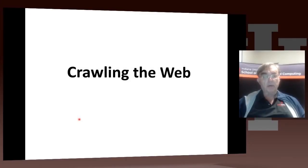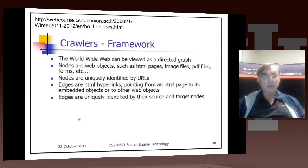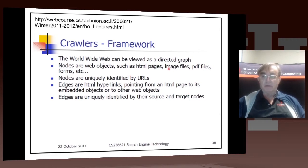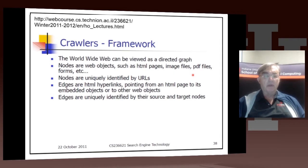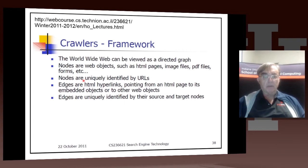Here are some remarks about crawling the web. We already discussed the web as a graph. The nodes of the web are the web objects, which are pages of various types: HTML, images, PDF, forms, videos, and so on.